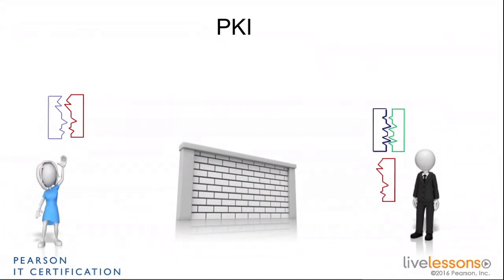For example, Alice is going to give to Bob the red key. The richness of this system is that now Bob is going to use that red key to encrypt traffic he wants to send to Alice. And because only the blue key can decrypt what the red key encrypted, Alice knows that only she will be able to read what Bob encrypted with the red key. So she's going to call that key — the red one — the public key, and give it to anyone who wants to send traffic to her in a secure manner.